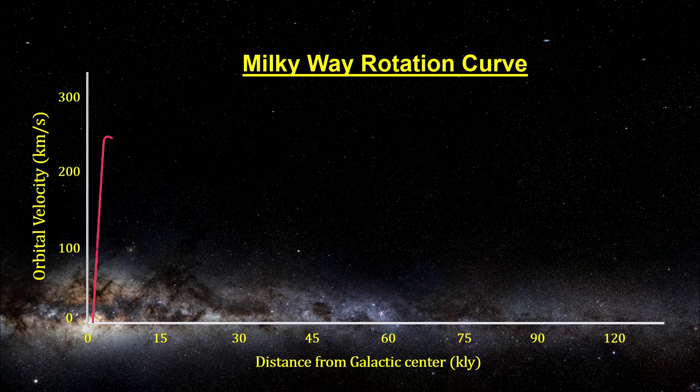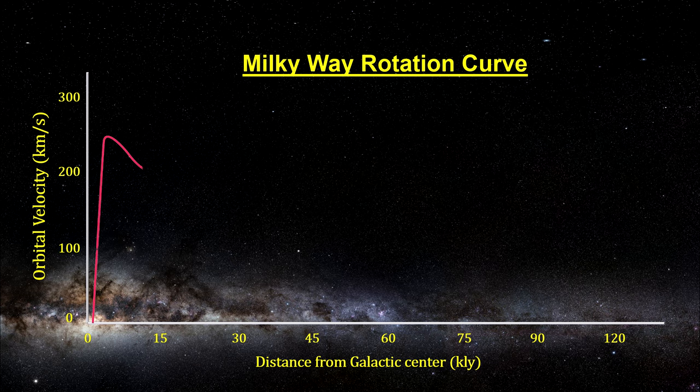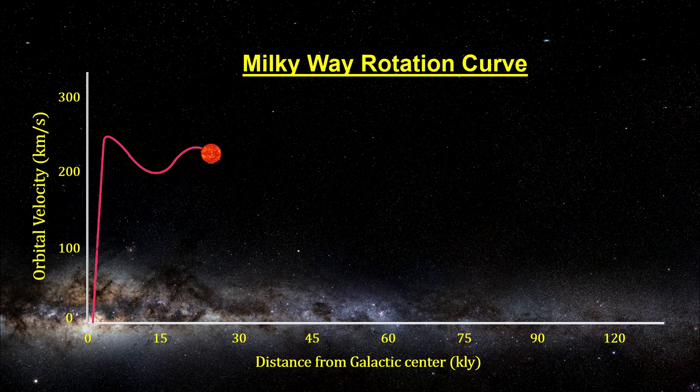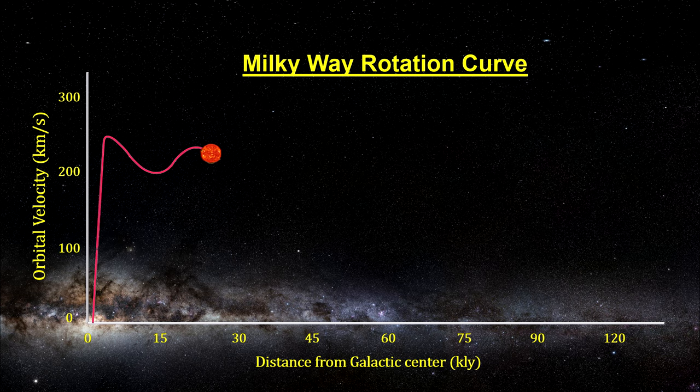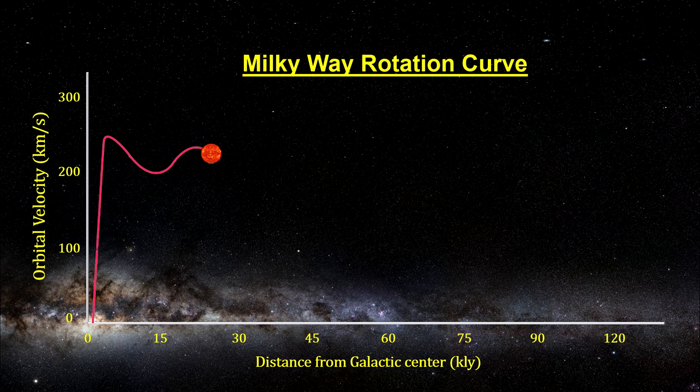So, for clouds closer to the center than we are, we can scan the sky bit by bit and create a map of the rotation velocity and distance for the inner galaxy. This map can then be used to find distances to all the clouds and the stars they contain, as long as they are closer to the center of the galaxy than we are.